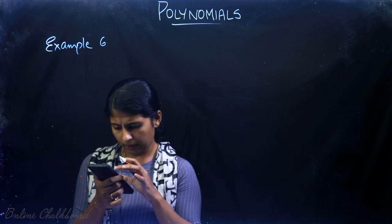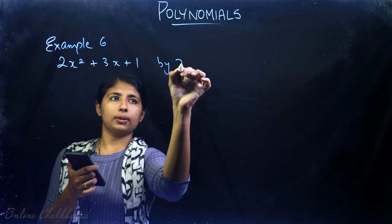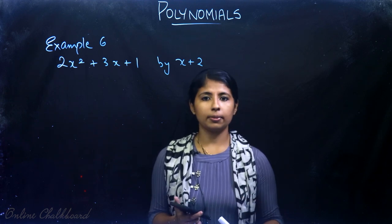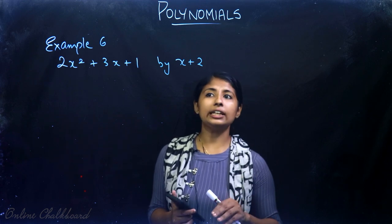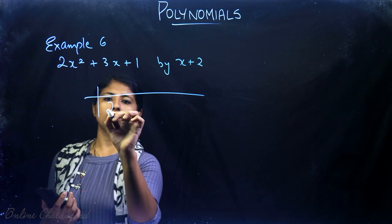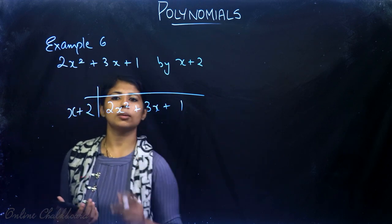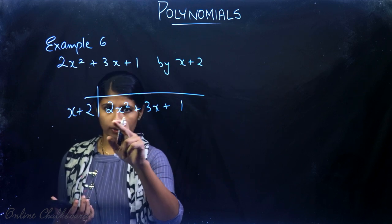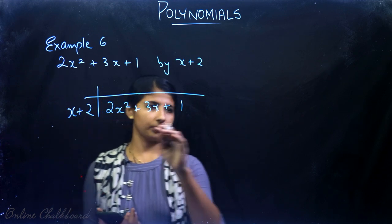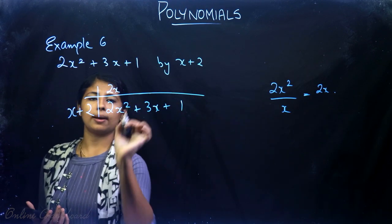Example 6 asks us to divide 2x² + 3x + 1 by x + 2. We must note that we stop the division process when we get a remainder. The first term of the quotient is found by dividing the highest power term of the dividend by the highest power term of the divisor. So 2x² divided by x gives 2x — that is the first term of the quotient.